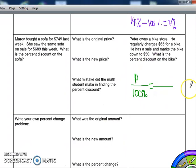So for this last one, I already have part of my proportion set up. Peter owns a bike store. He regularly charges $65 for a bike. That's the regular price. So I'm going to put that next to 100%.